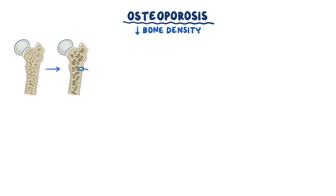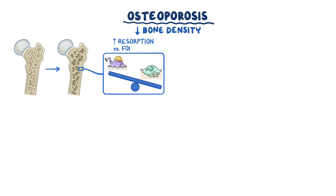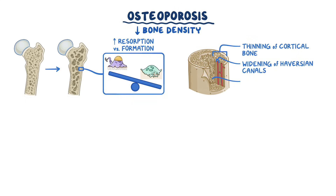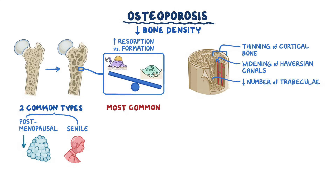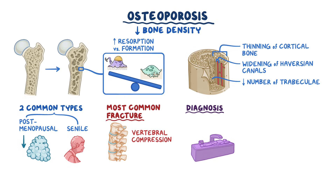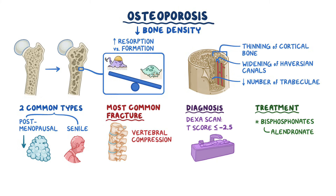As a quick recap: osteoporosis refers to decreased bone density on account of increased bone resorption compared to bone formation. In osteoporosis, there is thinning of the cortical bone, widening of the Haversian canals, and a decrease in the number of trabeculi in the spongy bone. The two common types are senile osteoporosis and postmenopausal osteoporosis. The most common fracture is a vertebral compression fracture. Diagnosis is done with a DEXA scan, where a T-score equal to or less than negative 2.5 equals osteoporosis. First-line treatment relies on bisphosphonate drugs like alendronate and risedronate.